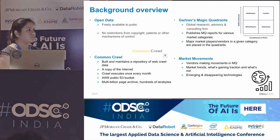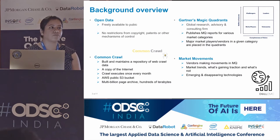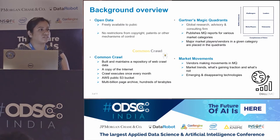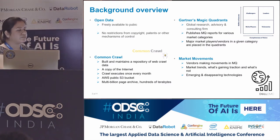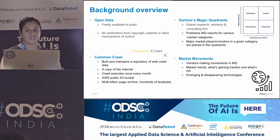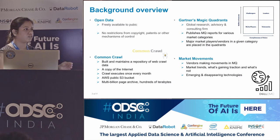Gartner is a global research, advisory, and consulting firm. They've been helping their clients make the right decisions and choose the right technology or strategy for more than 40 years now. What is of our interest here is their Magic Quadrant reports that they publish on a regular basis for various different market categories. The four quadrants are Leaders, Challengers, Niche Players, and Visionaries. Vendors in a given market category are placed in one of these quadrants based on a criteria that Gartner uses to assess or evaluate these vendors for a given technology or market space.